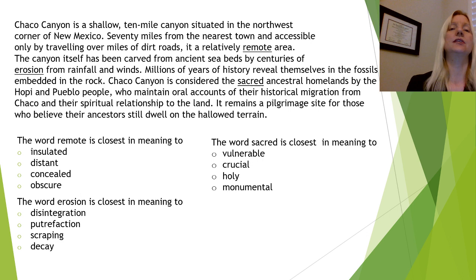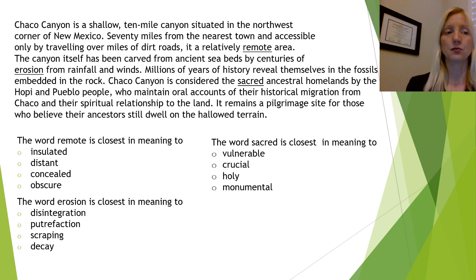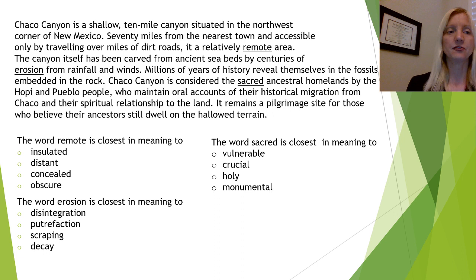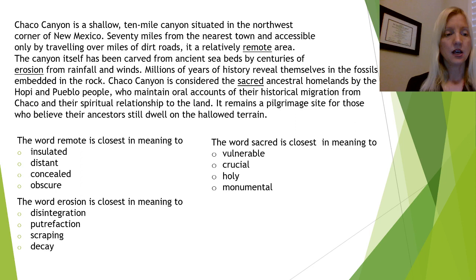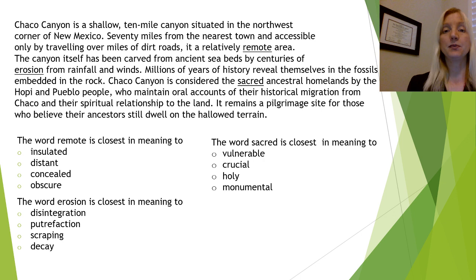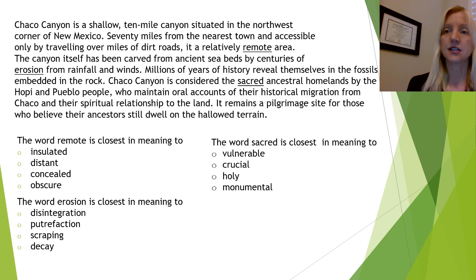For remote, the context tells us you have to travel over miles of dirt road to get there, meaning it's far from metropolitan areas — a distant area. The second answer is correct: it is a relatively distant area. For erosion, the context tells us it happened from rainfall and winds. We know what happens to rock with a lot of rainfall and wind — it breaks down and wears down. So the first answer, disintegration, is correct. For sacred, the context says they have a spiritual relationship with the land and that it is hallowed terrain, which tells us this is very important to their culture. The third answer is correct: sacred means holy.